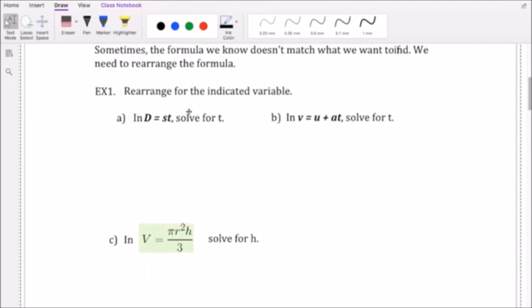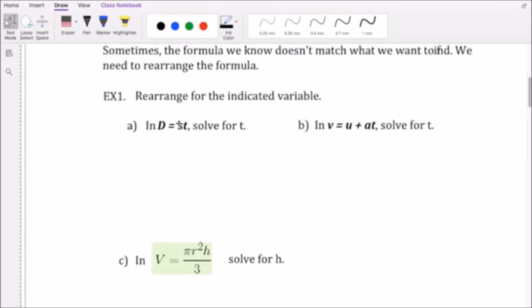For example, we have a distance formula right here. So distance equals speed times time. But it asks us to solve for t instead of d. Currently we have distance equals speed times time, but now we want to solve for t. So we need to move the s over and isolate the t.